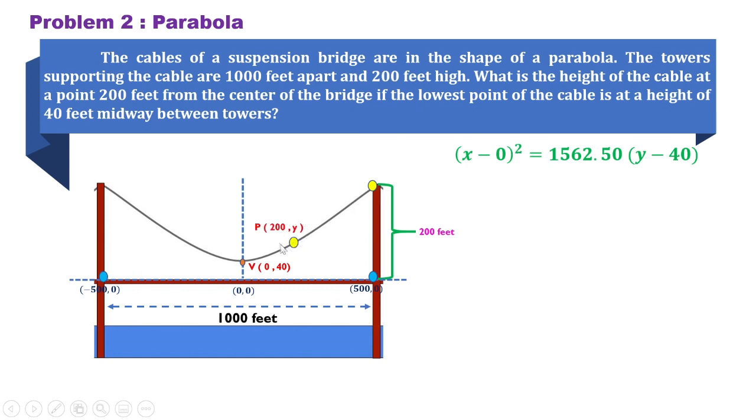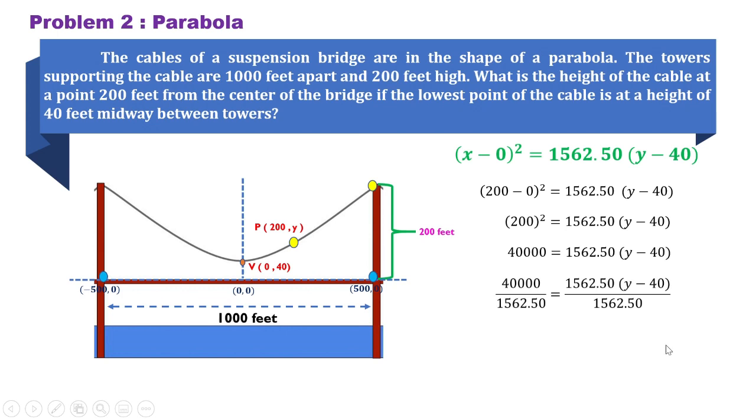To answer the question of the height of the cable 200 feet from the center of the bridge, we have to solve for y. We need to substitute 200 to our x here. So that would be 200 squared is 40,000 is equal to 1,562.50 times (y minus 40). Dividing both sides by 1,562.50, this will be cancelled, and therefore we can have 25.60 is equal to y minus 40. So y is equal to 25.60 plus 40 or 65.60 feet.